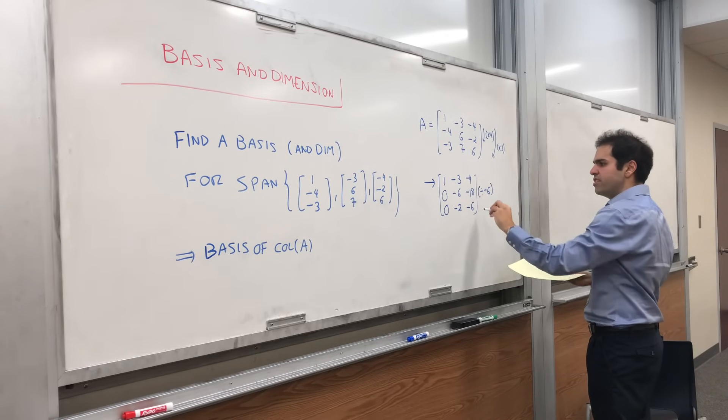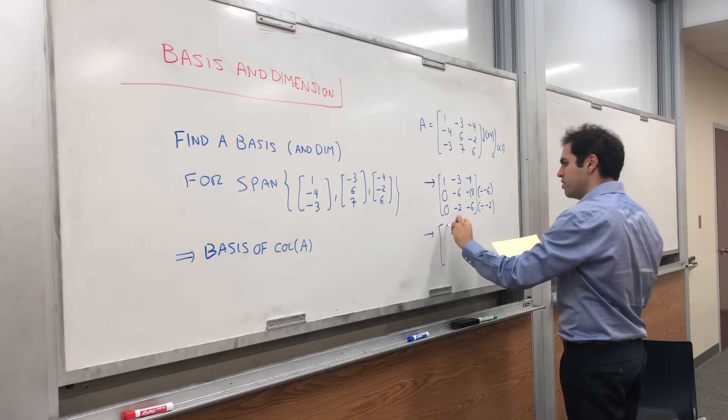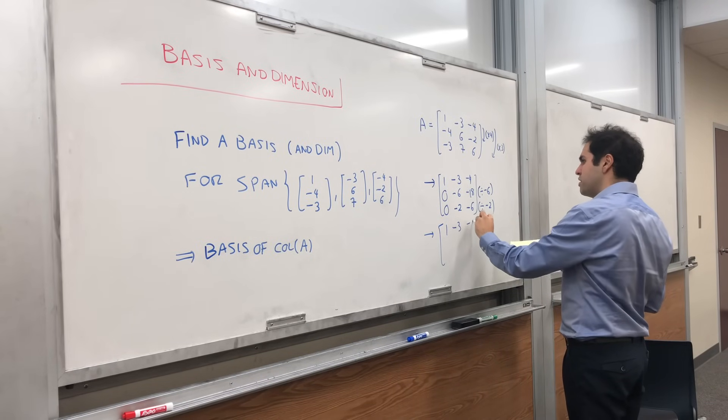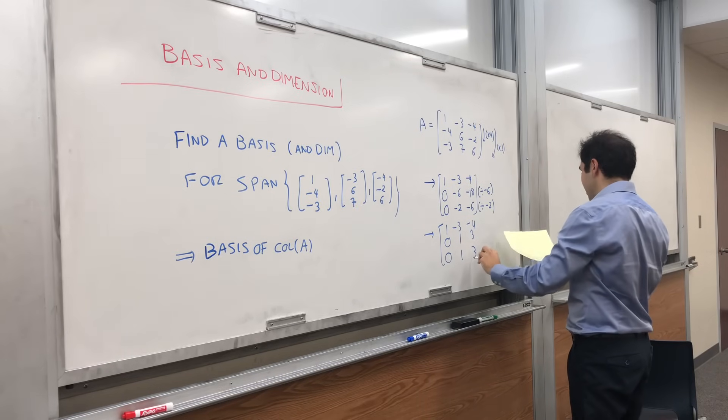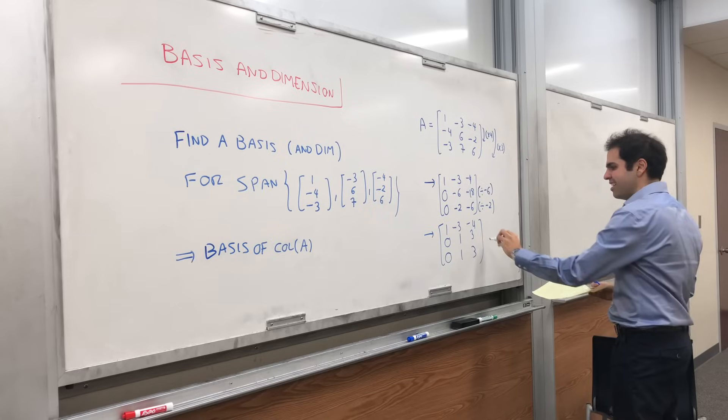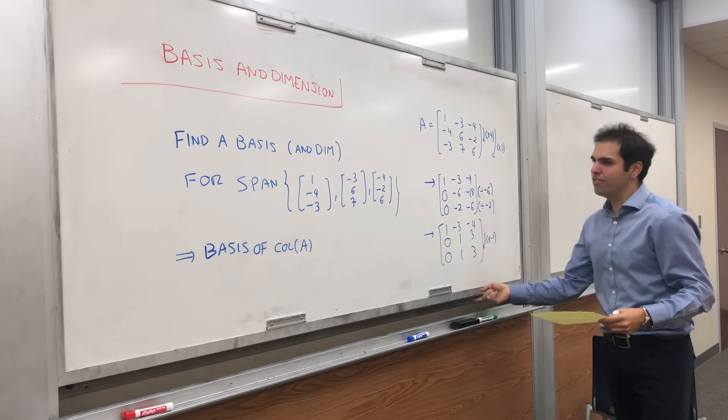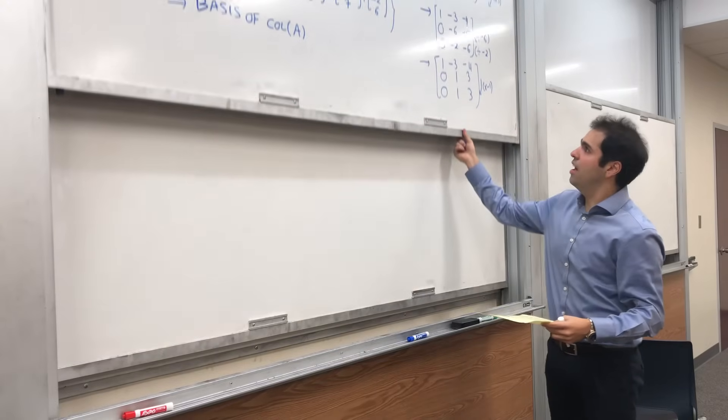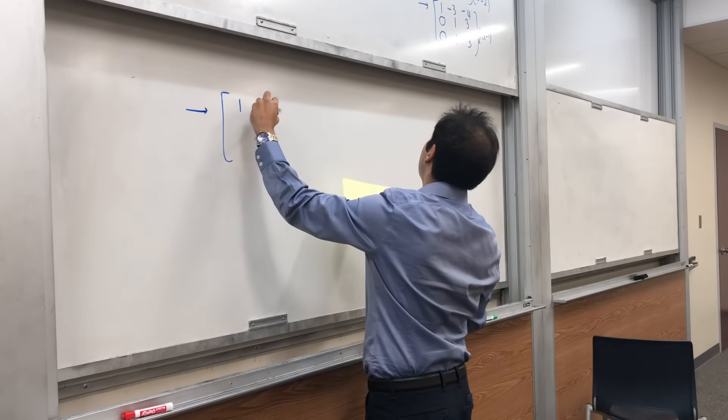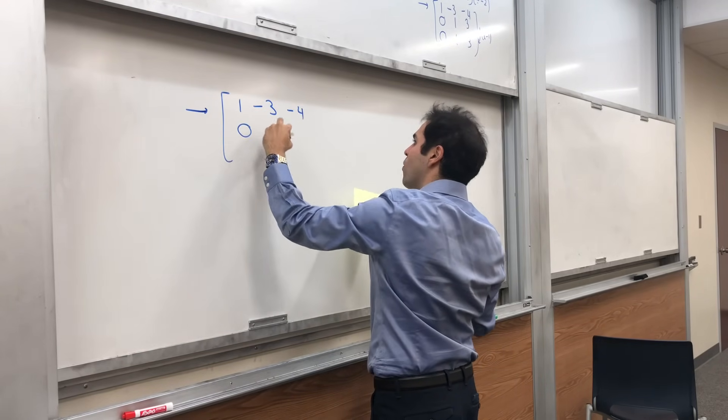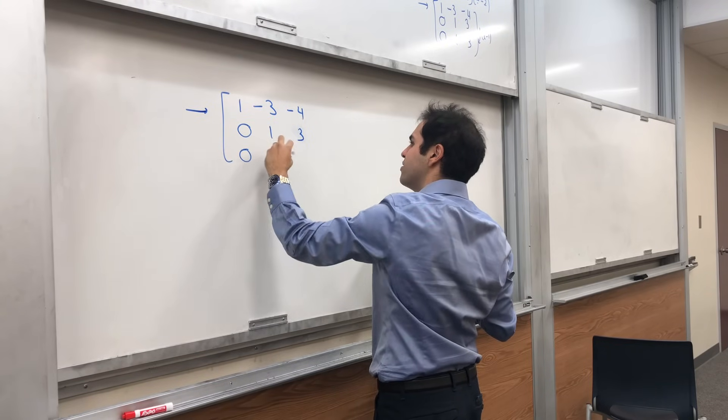So we get [1, -3, -4], [0, 1, 3], [0, 1, 3]. How nice, you can subtract the second row from the third. And we get, in the end, [1, -3, -4], [0, 1, 3], and [0, 0, 0].